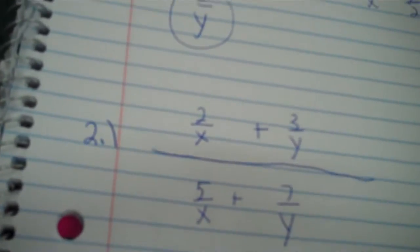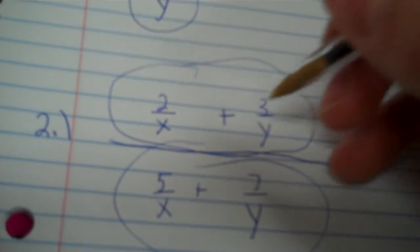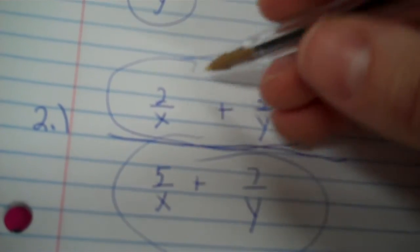Meanwhile, in the denominator, you have five over x plus seven over y. Now circle the top and the bottom when you're doing a complex fraction. Now look at the top. In order to add these, we need common denominators. Right now, we don't have that because we have an x and a y.